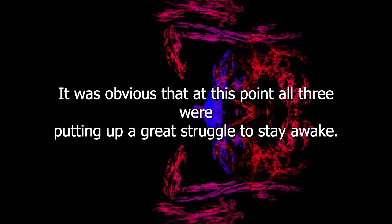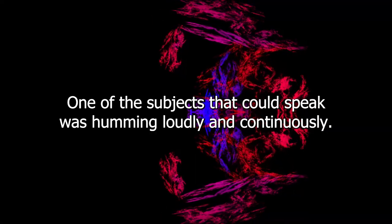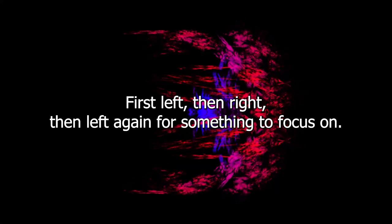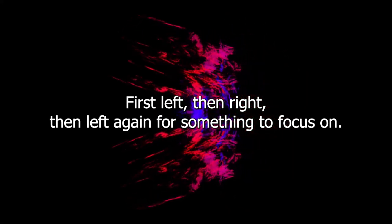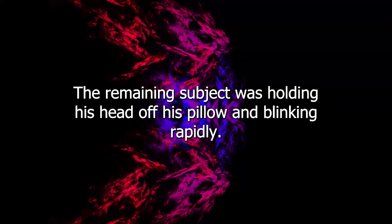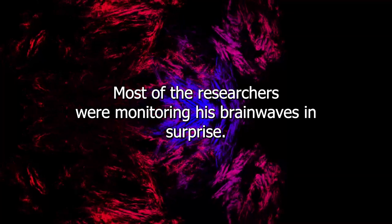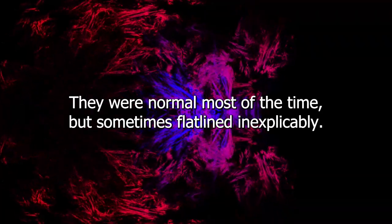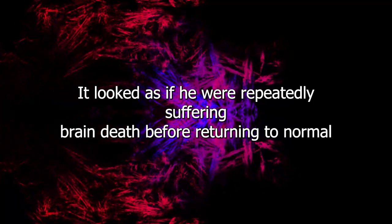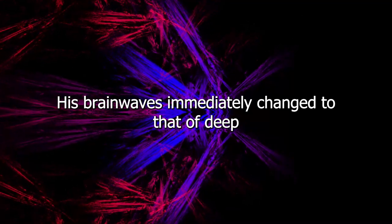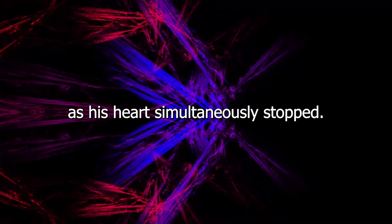It was obvious that at this point all three were putting up a great struggle to stay awake. One of the subjects that could speak was humming loudly and continuously. The mute subject was straining his legs against the leather bonds with all his might, first left, then right, then left again for something to focus on. The remaining subject was holding his head off his pillow and blinking rapidly. Having been the first to be wired for EEG, most of the researchers were monitoring his brainwaves in surprise. They were normal most of the time, but sometimes flat-lined inexplicably. It looked as if he were repeatedly suffering brain death before returning to normal. As they focused on paper scrolling out of the brainwave monitor, only one nurse saw his eyes slip shut at the same moment his head hit the pillow. His brainwaves immediately changed to that of deep sleep, then flat-lined for the last time as his heart simultaneously stopped.